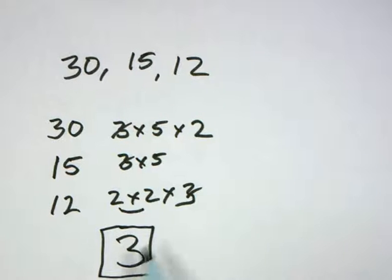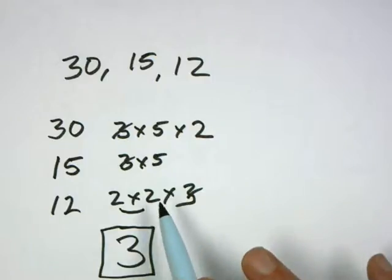This method does work, this little factor tree method. And my GCD is, greatest common divisor, is 3 for this one. Thank you.